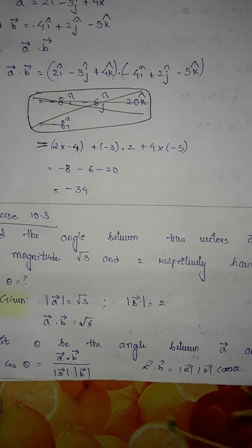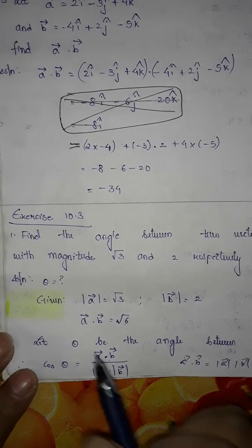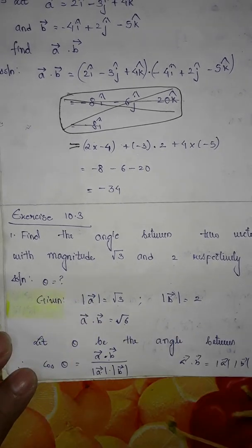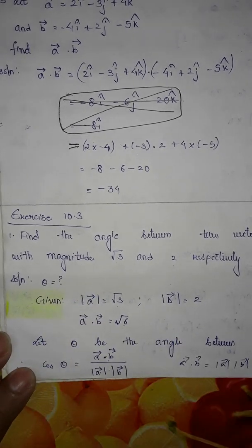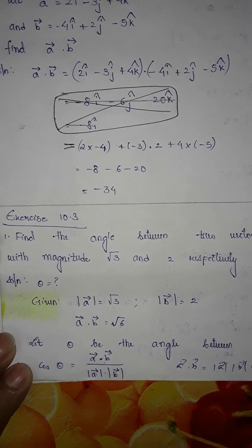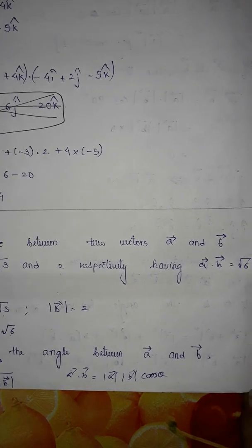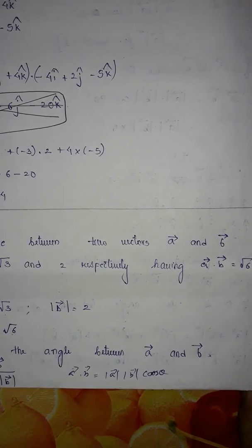Hello students, today we will do exercise 10.3. Question number 1: Find the angle between the vectors a and b with magnitude √3 and 2 respectively, having a·b equal to √6.